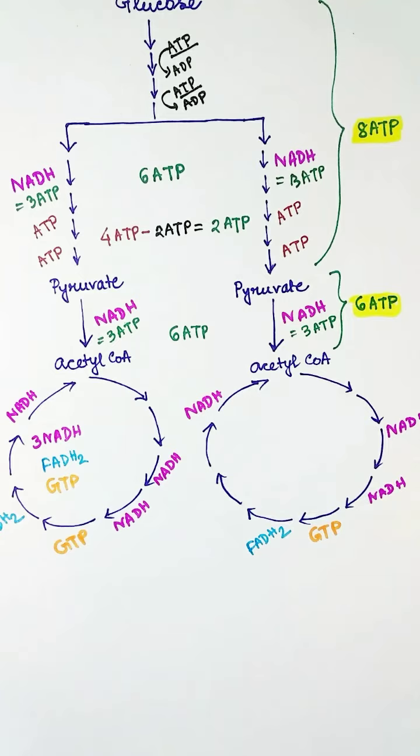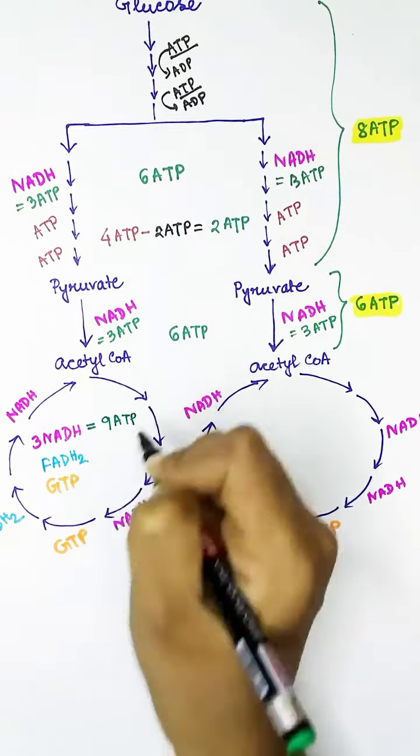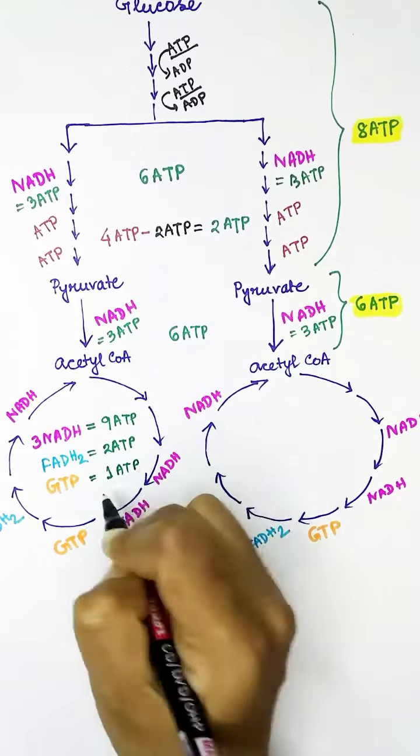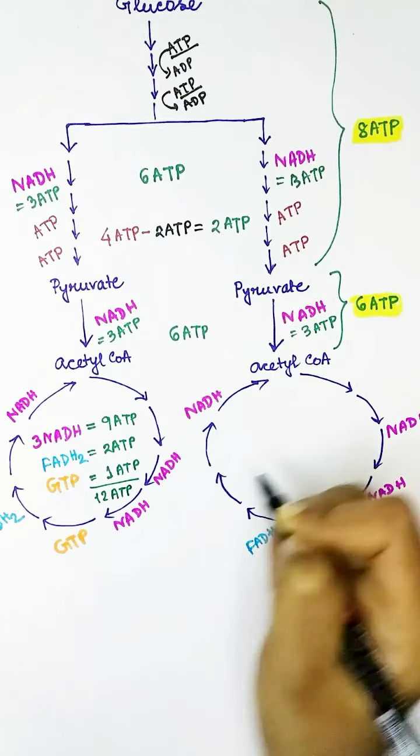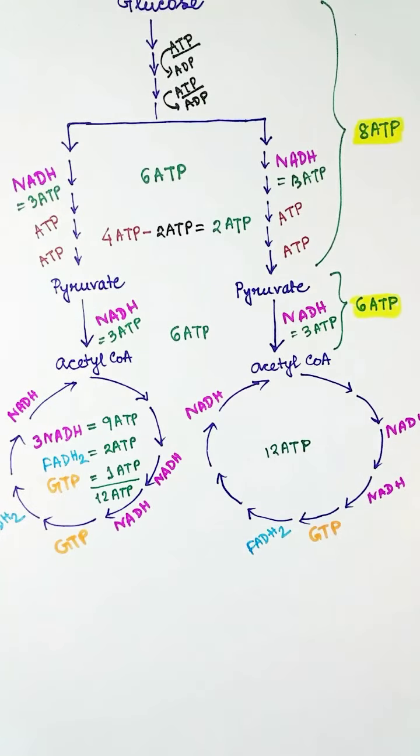One FADH2 is equivalent to two ATPs, and one GTP is equivalent to one ATP. So total ATP gain in Krebs cycle is 12.